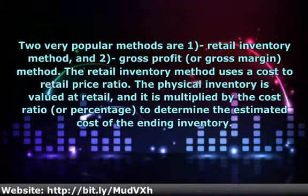The retail inventory method uses a cost to retail price ratio. The physical inventory is valued at retail, and it is multiplied by the cost ratio, or percentage, to determine the estimated cost of the ending inventory.